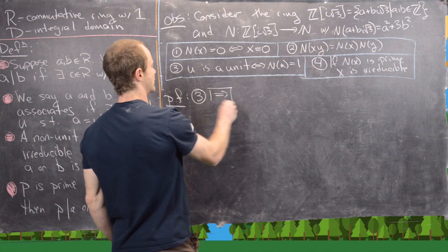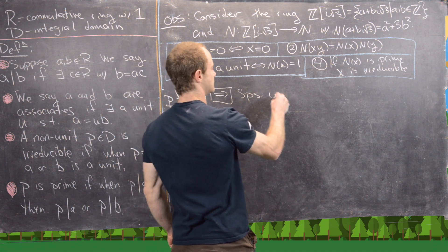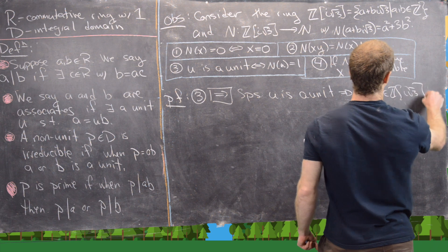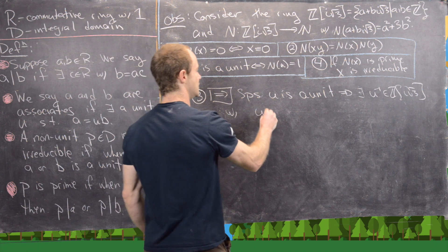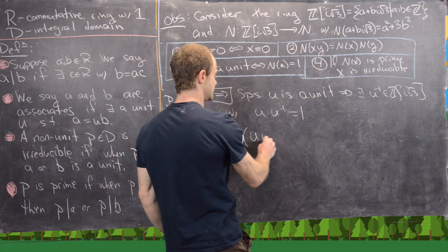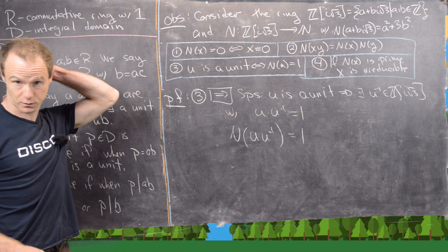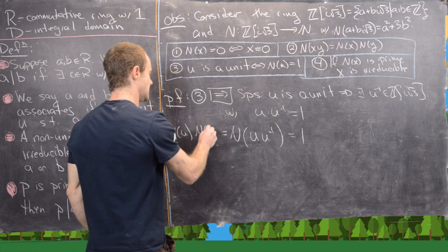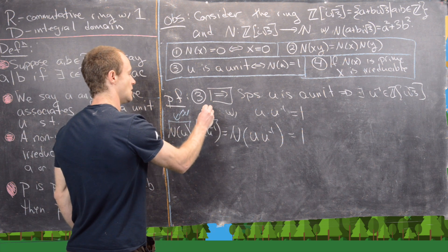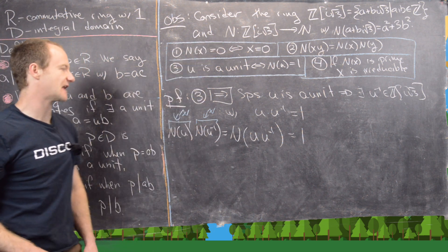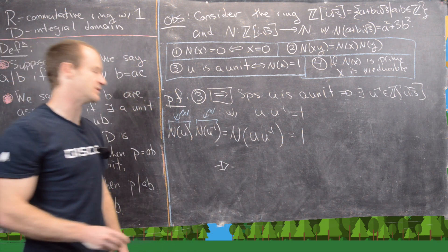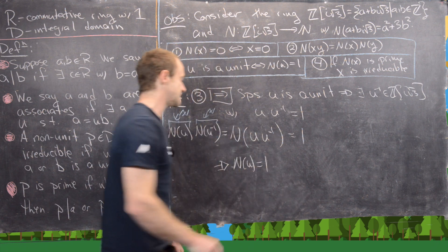For property 3, forward direction: suppose u is a unit, so u·u⁻¹ = 1. Applying N and using property 2: N(u)·N(u⁻¹) = N(1) = 1. Since both are natural numbers and their product is 1, they must both equal 1, so N(u) = 1.